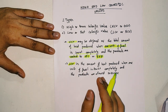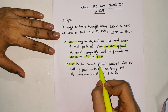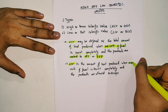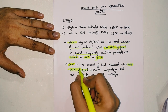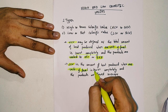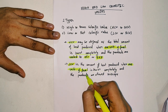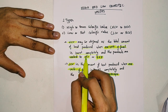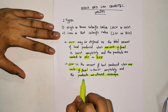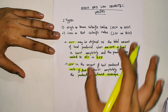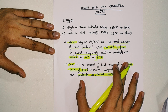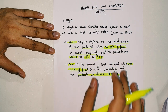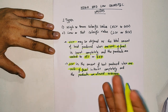LCV has a very similar definition. LCV is the amount of heat produced when one unit of fuel is burned completely, but the products are allowed to escape. The key difference is: in HCV the products are cooled to 16 degrees Celsius or 60 degrees Fahrenheit, while in LCV the products are allowed to escape.